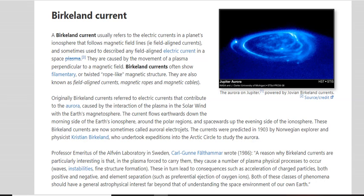Originally, Birkeland currents referred to electric currents that contribute to the aurora caused by the interaction of the plasma in the solar wind with Earth's magnetosphere. But based on current studies and plasma scaling, you can scale this up to the entire universe scale and all the way down to the electron microscope scale. The current flows earthwards down the morning side of Earth's ionosphere around the polar regions and spacewards up in the evening side of the ionosphere. These currents are now sometimes called auroral electrojets. The currents were predicted as early as 1903 by the Norwegian explorer and physicist Christian Birkeland, who undertook expeditions into the Arctic to study the aurora.